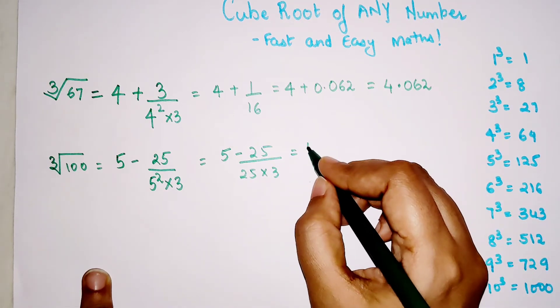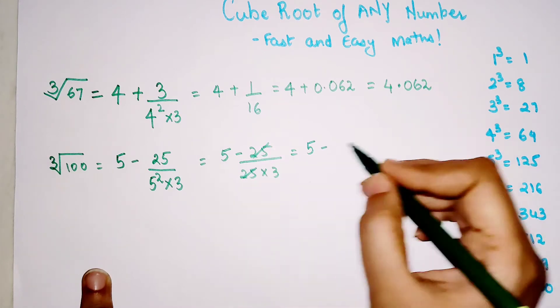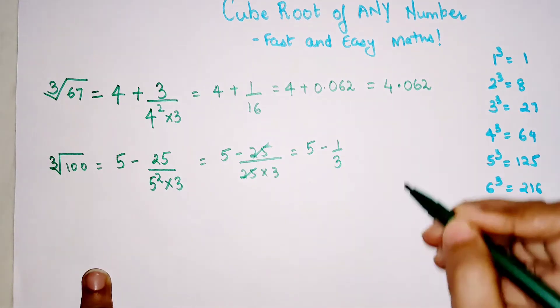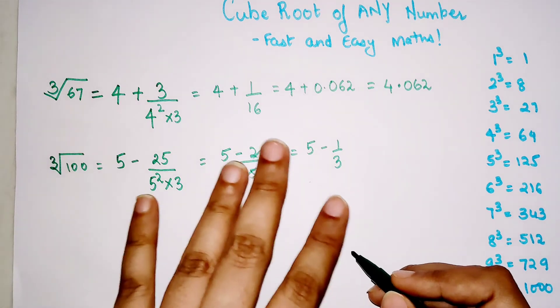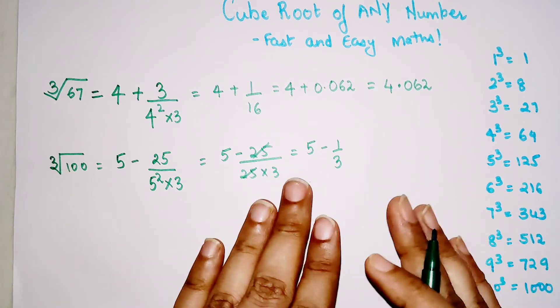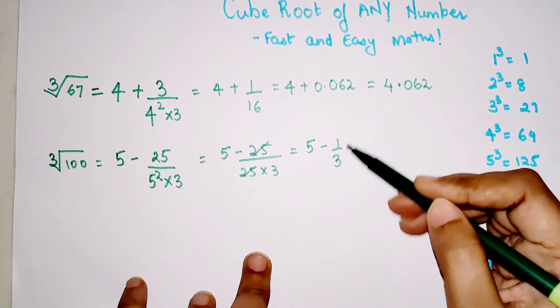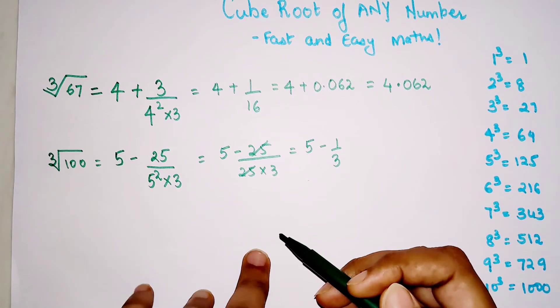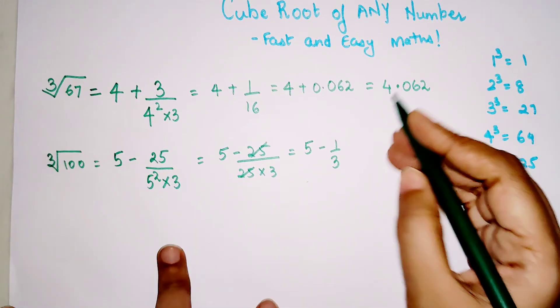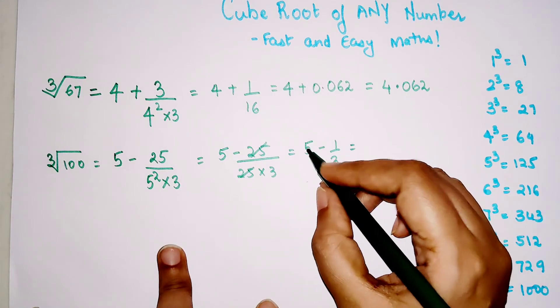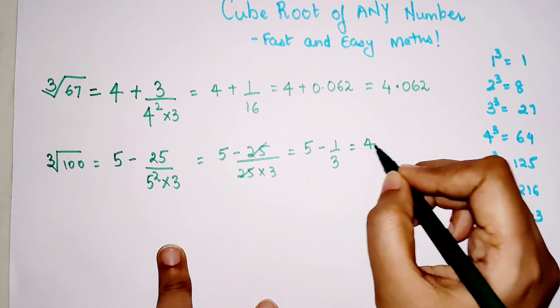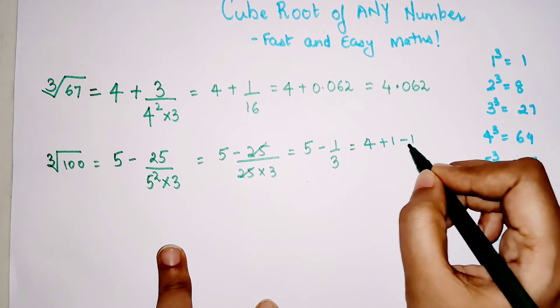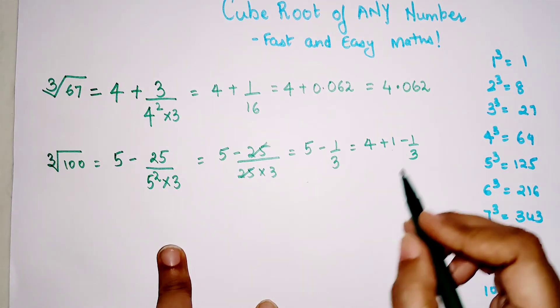Your answer now changes to 5 minus 25 upon 75, so it becomes 5 minus 1 upon 3. If you don't want to deal with decimals directly, what you can do is split this 5 as 4 plus 1 minus 1 by 3.